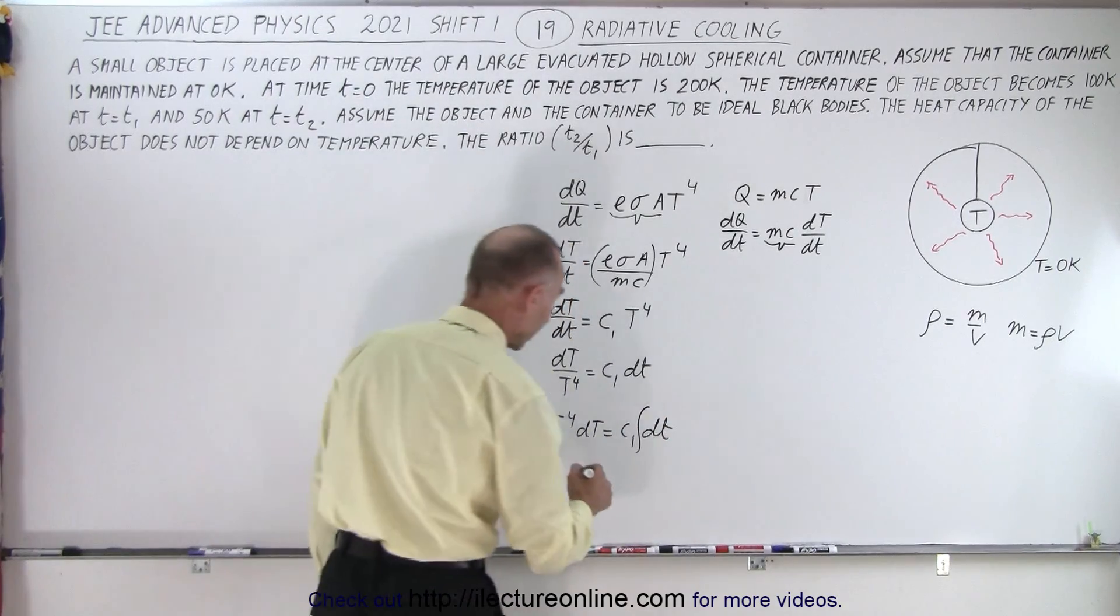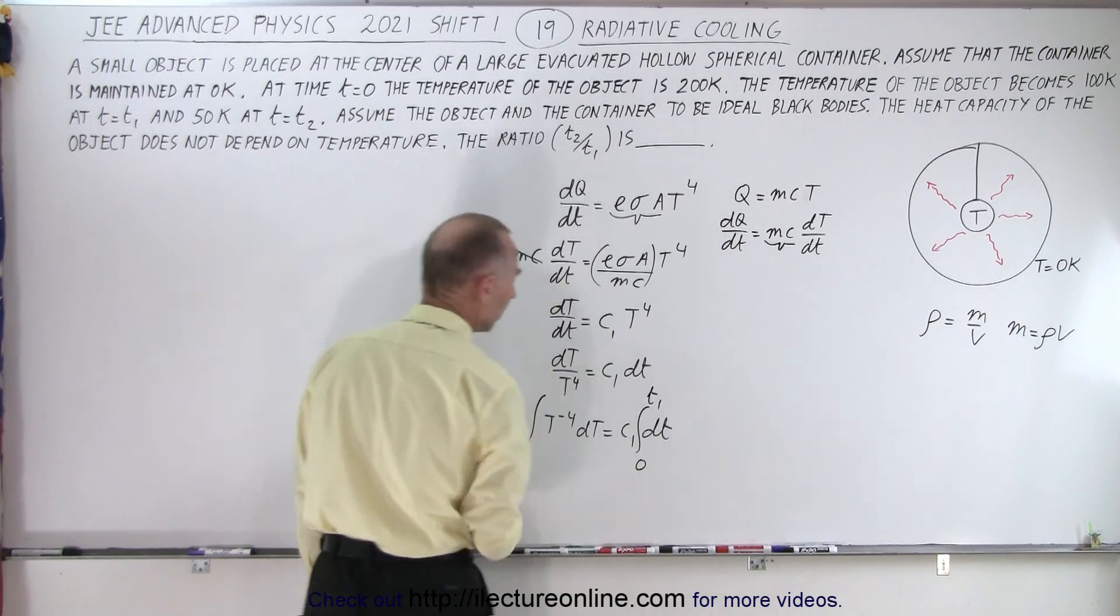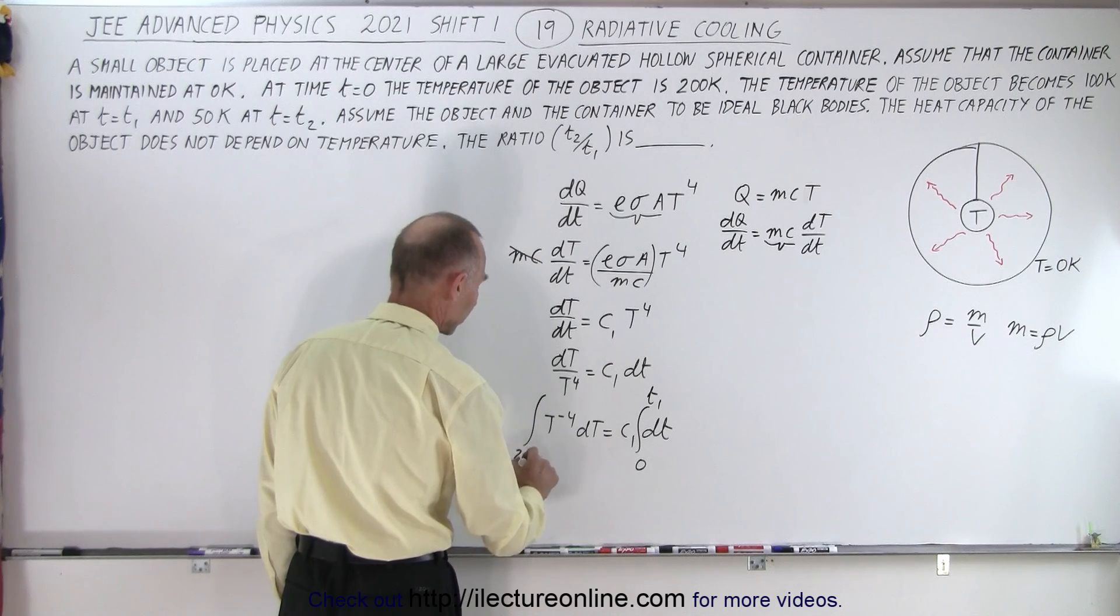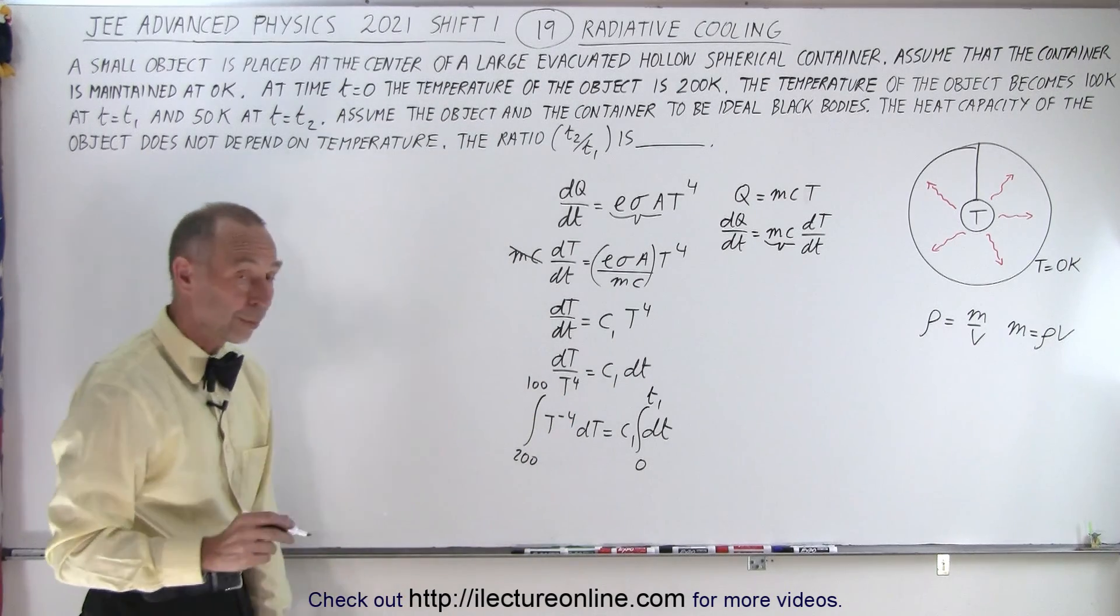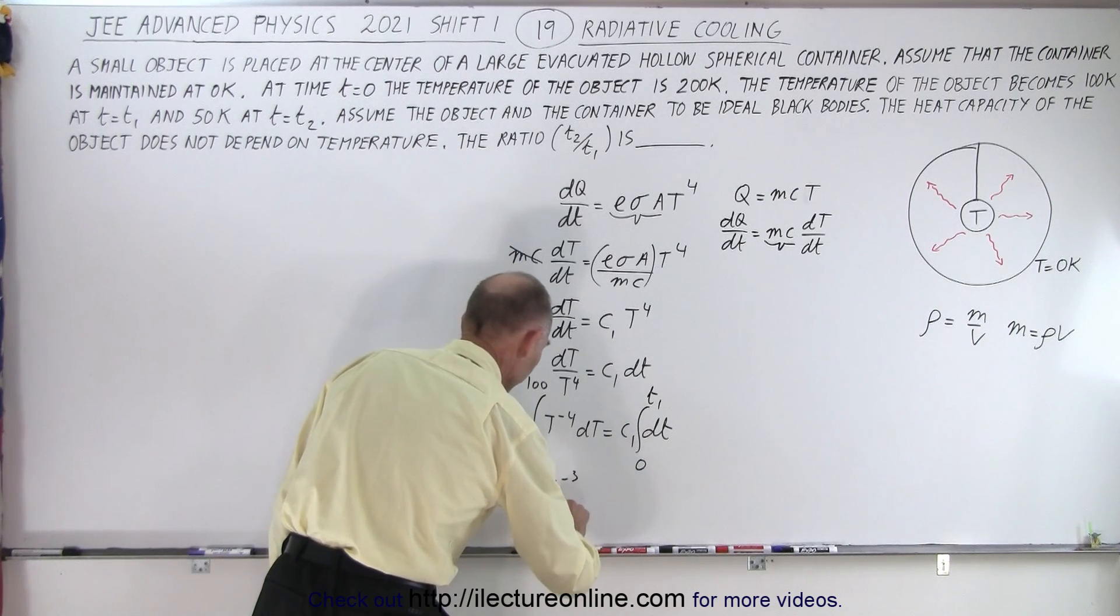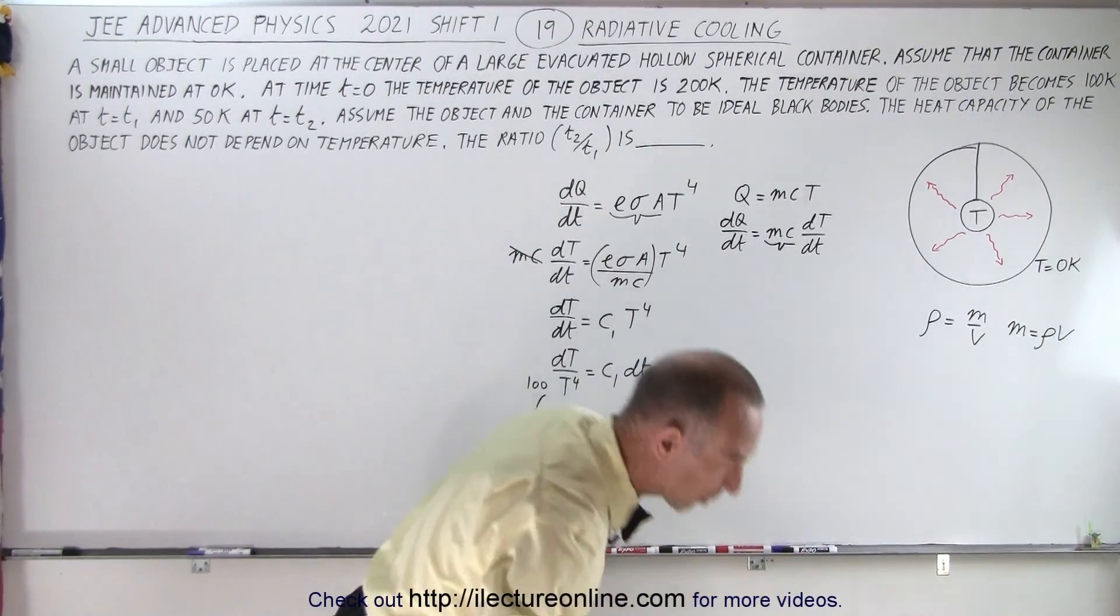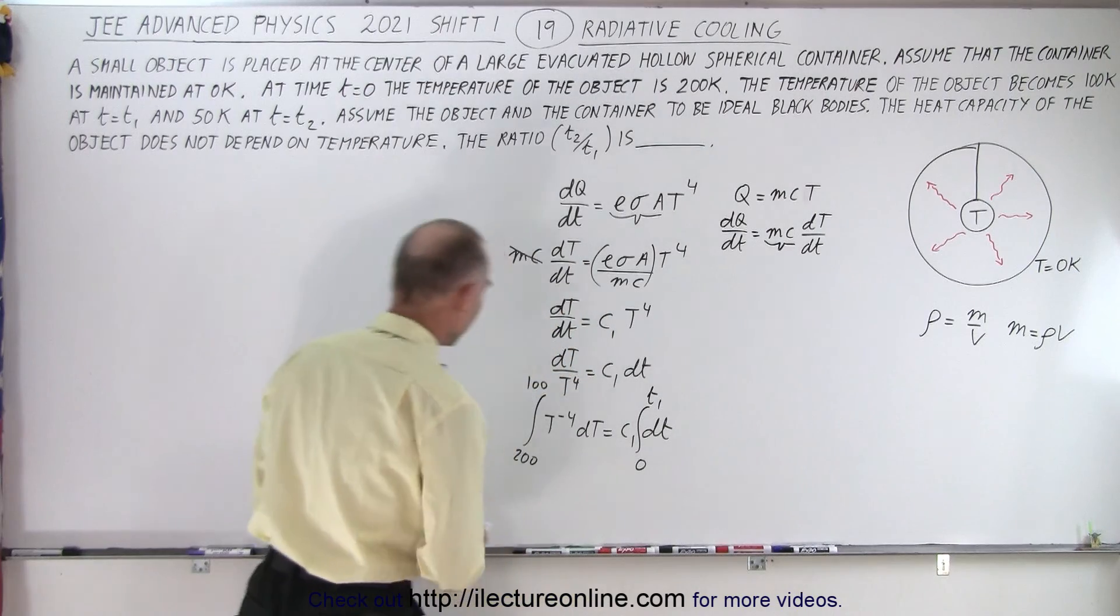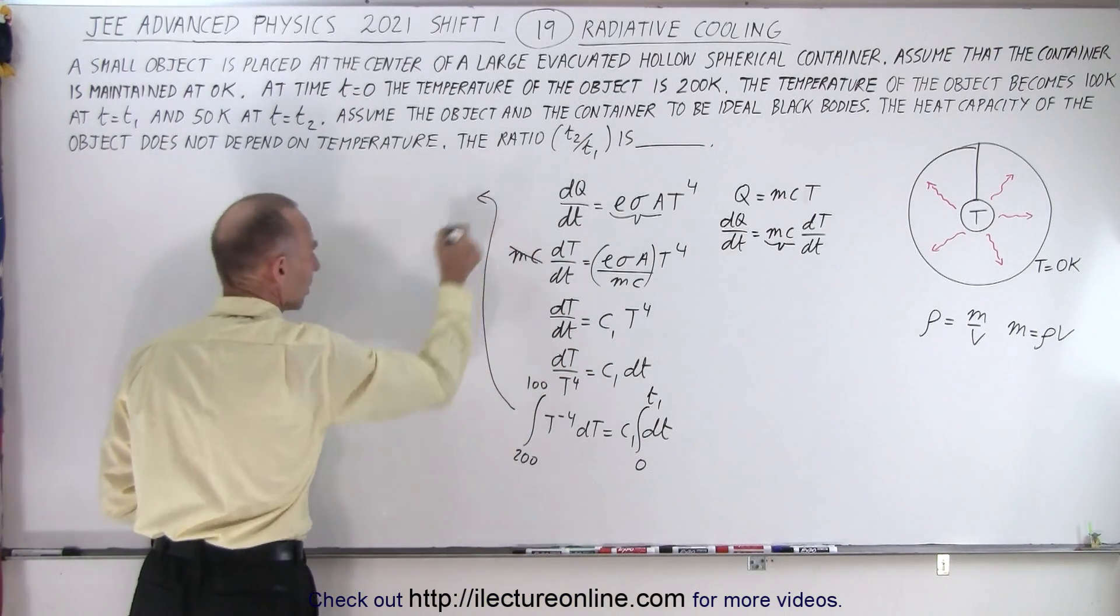First, we integrate from time 0 to t₁, with temperature going from 200K to 100K. When we integrate, we get T⁻³/(-3).